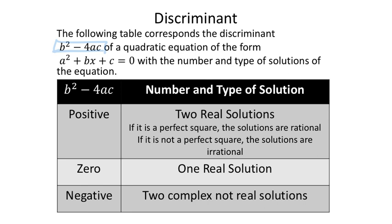Like we saw in the last lesson, if b squared minus 4ac ends up being negative, then our answers are imaginary or complex — you end up with two solutions, but they're not real. If this equals zero, you end up with one solution, because you'd be adding and subtracting zero. If it's positive, you end up with two real solutions. If it's a perfect square, you get rational solutions; if it's a non-perfect square, the solutions are irrational.